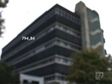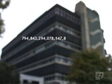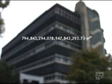And the highest number is this. Seven hundred and ninety-four quintillion eight hundred and forty-three quadrillion, two hundred and ninety-four trillion, seventy-eight billion, one hundred and forty-seven million, eight hundred and forty-three thousand, two hundred and ninety-three point seven three recurring, multiplied by e to the power of pi, to the power of e to the power of pi.